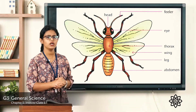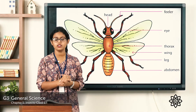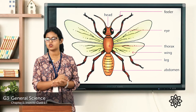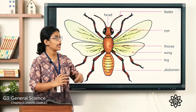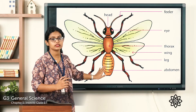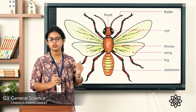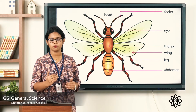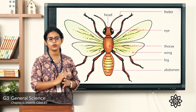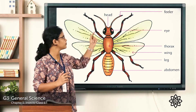The body of an insect is divided into three main parts. Do you know which are the three main parts? That is the head, the thorax, and the abdomen. These are the three main parts of the body of an insect. Let's start with the head.